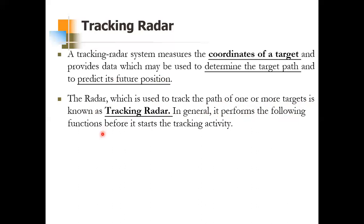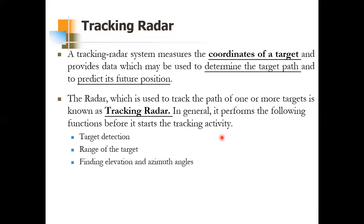In general, tracking radar performs the following functions. First is target detection, which we discussed in previous modules — probability of detection and false alarm. Apart from target detection, it should find the range of the target, then find the elevation and azimuth angles. Range gives you the distance from the radar to the target; elevation and azimuth angles give the location. Finally, it also finds the Doppler frequency shift, so you know if the target is coming towards you or moving away.